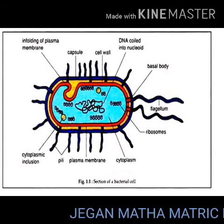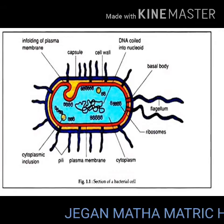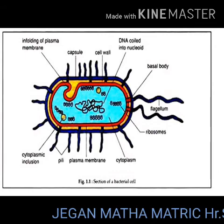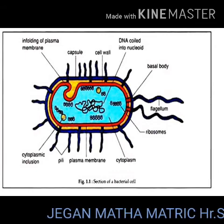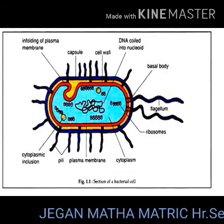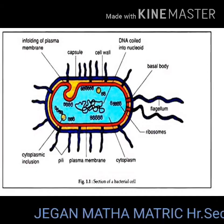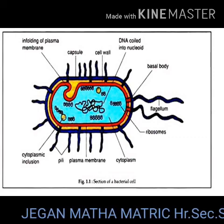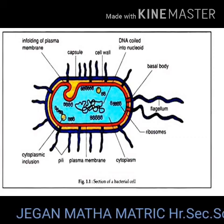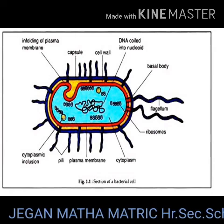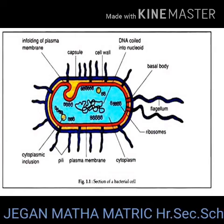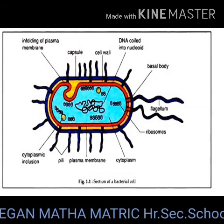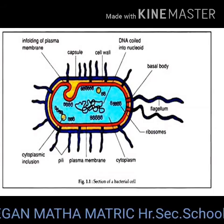Polysomes or polyribosomes: ribosomes are the site of protein synthesis. The number of ribosomes per cell varies from 10,000 to 15,000. The ribosomes are of the 70S type. The ribosomes are held together by messenger RNA and form polyribosomes or polysomes.